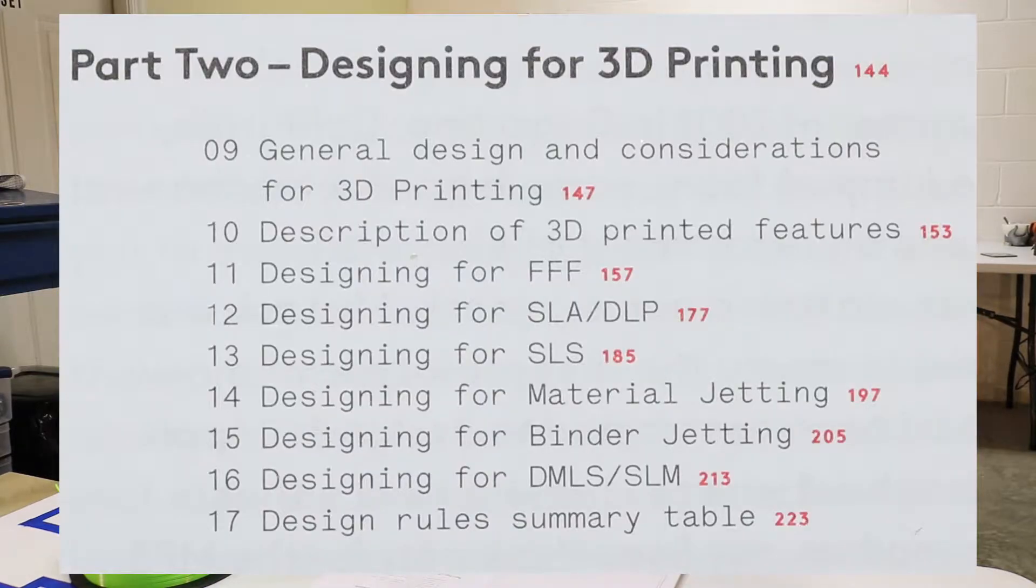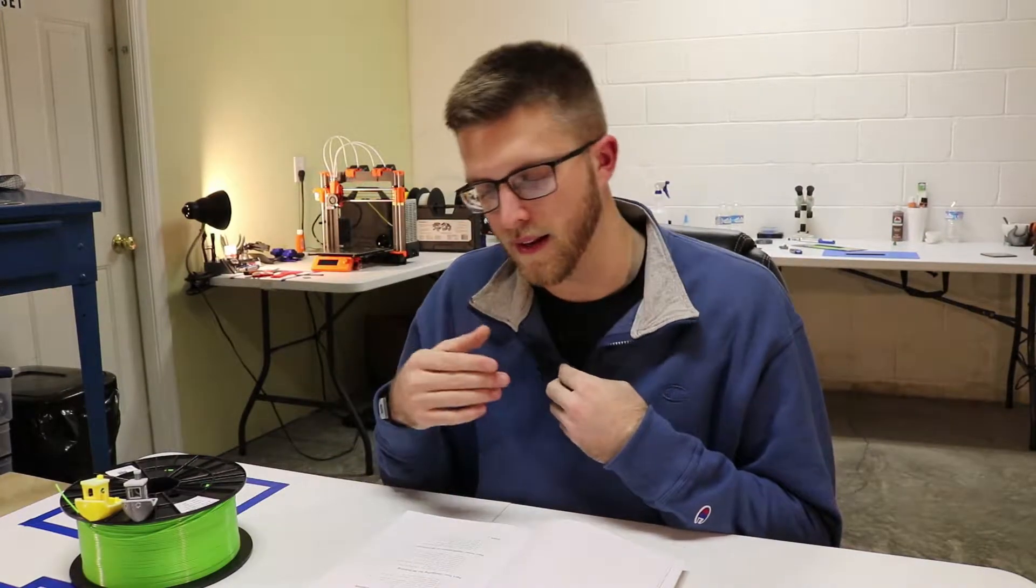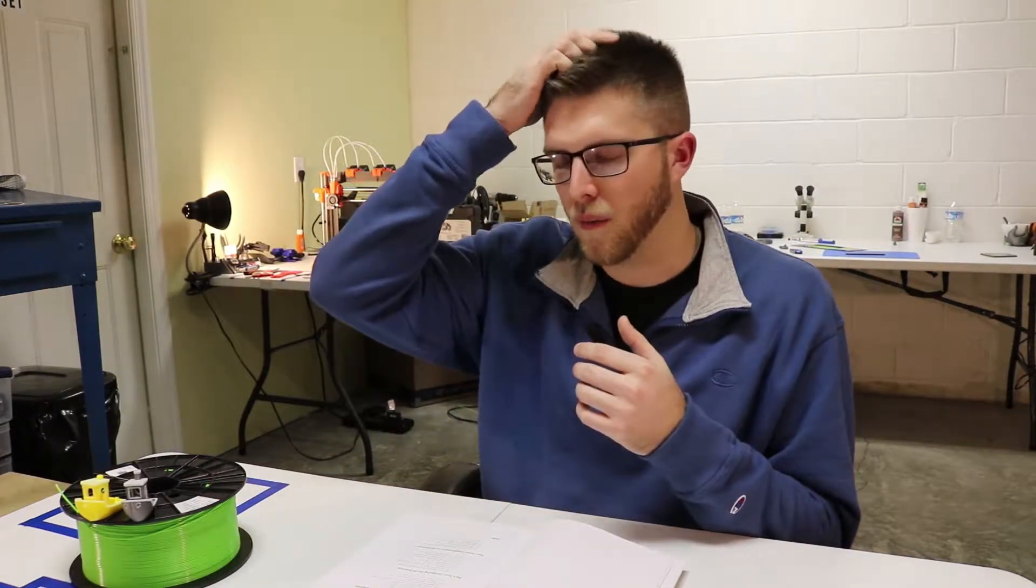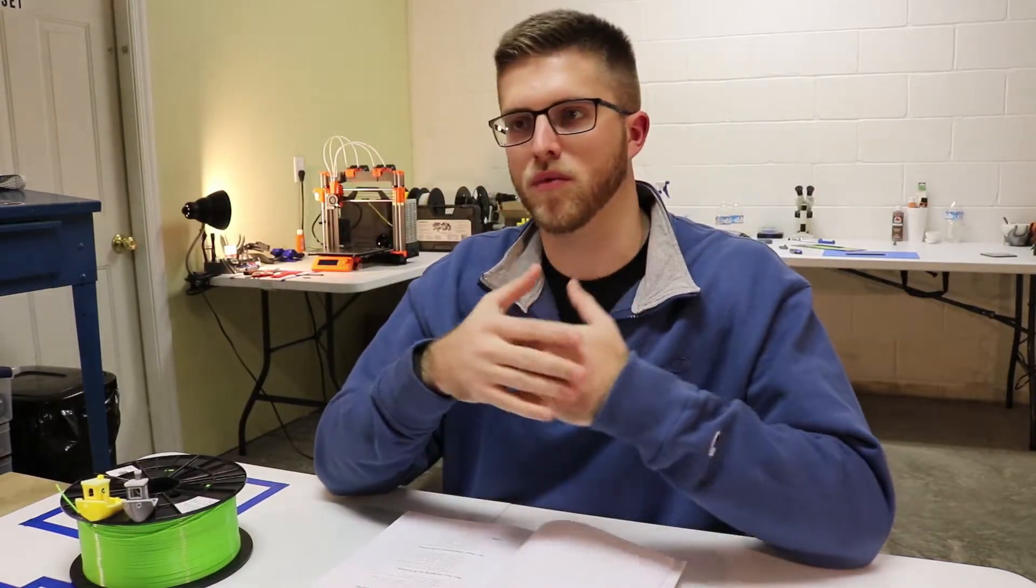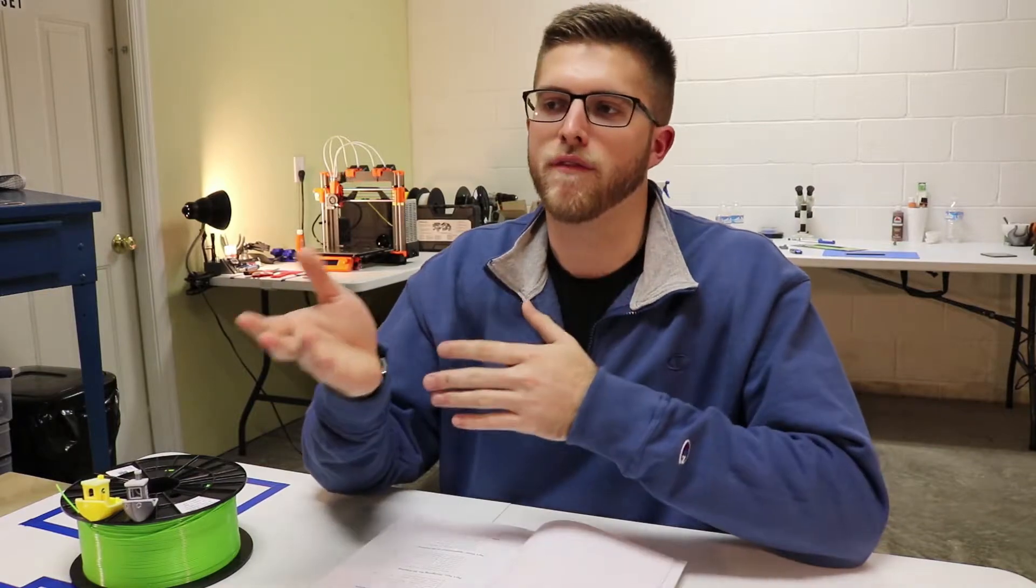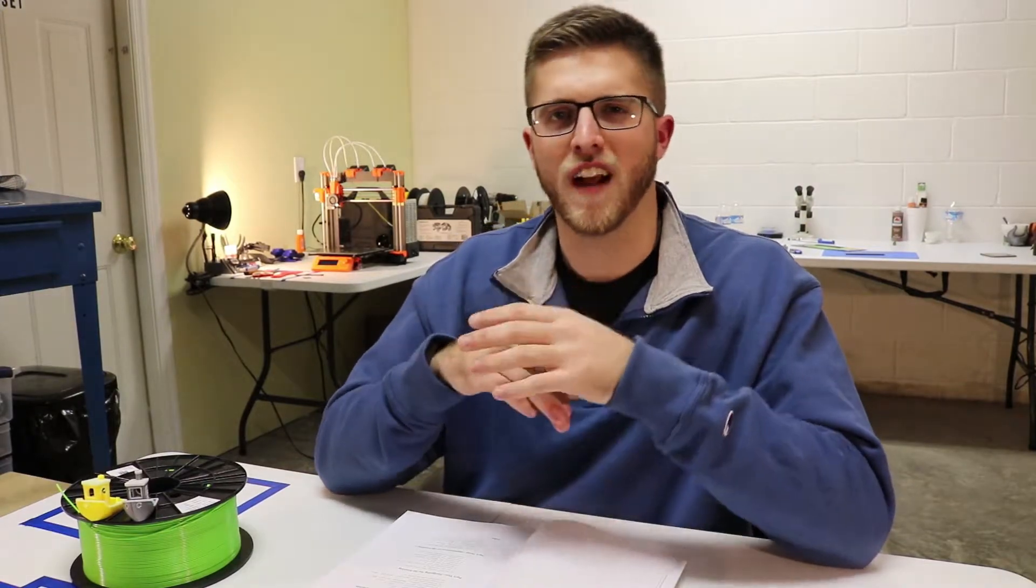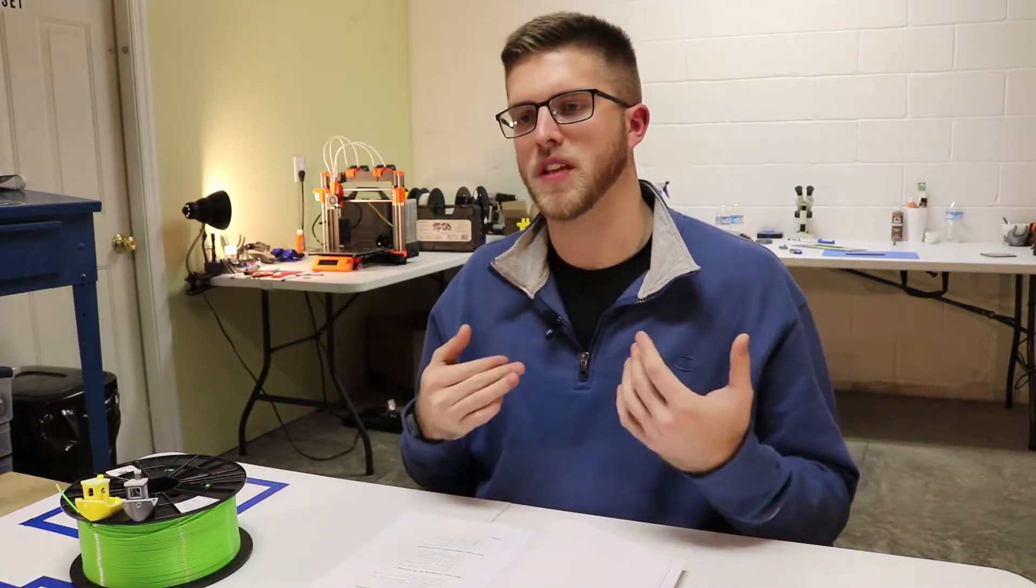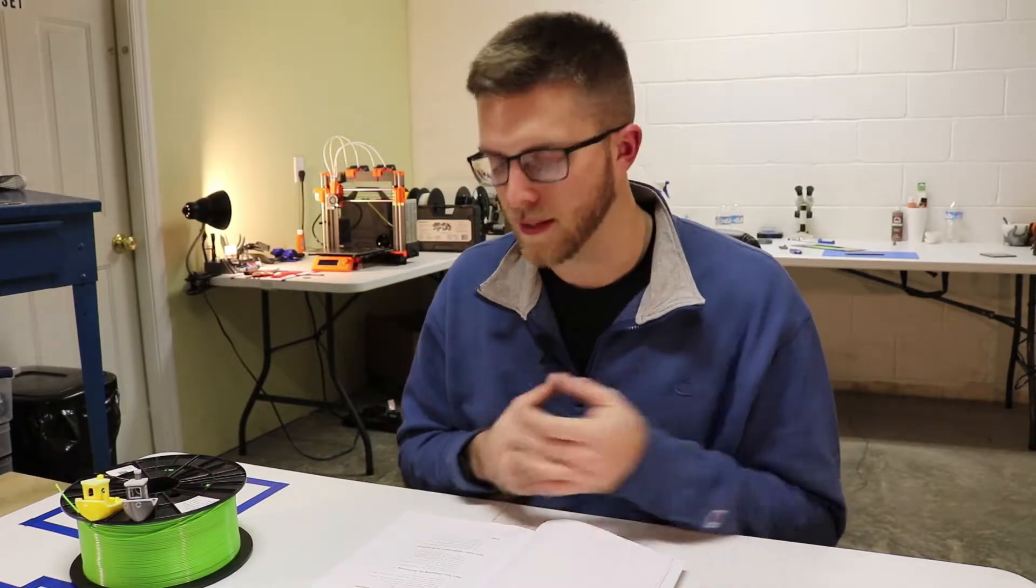And then part two is actually designing for 3D printing. This gets more into designing parts specifically for the type of 3D printing that you're doing. And some people may think that that doesn't really have too big of an impact on the outcome of your part, but it really does. And I've actually seen that in my parts. For example, the difference between a fillet and a chamfer. And we'll actually show you guys an example of that in SOLIDWORKS so you can kind of see the differences. But those differences definitely affect the quality of the part and it's something that you want to understand as you're designing a part. That way it can come out the quality that you're expecting it to.